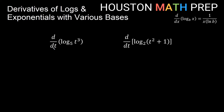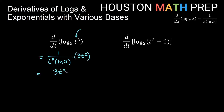The derivative with respect to t of log base 5 of t cubed: the derivative of a log of something is 1 over that something, so 1 over t cubed, divided by ln of the base — ln 5. The chain rule says multiply by the derivative of t cubed: power rule gives 3t squared. So we have 3t squared over (t cubed times ln 5). We can reduce two copies of t from top and bottom, leaving 3 over (t times ln 5).